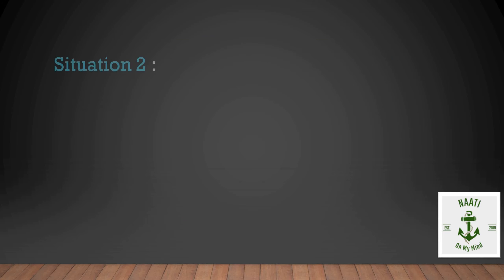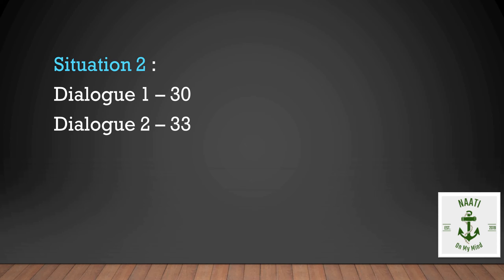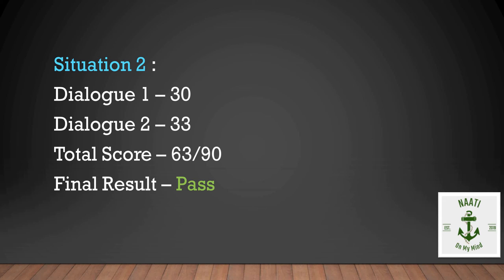In the second situation, in dialogue 1 he scored 30 and in dialogue 2 he scored 33. The total score is 63 out of 90. The final result is passed, because he scored the minimum 29 in each dialogue and his overall score is 63, which is the minimum required to clear the exam.